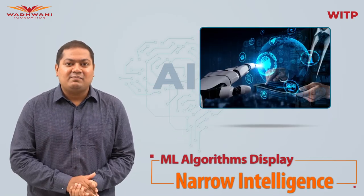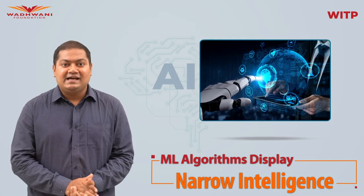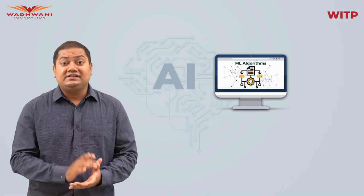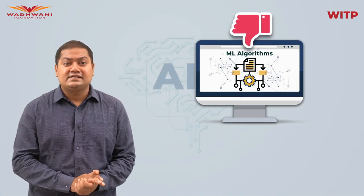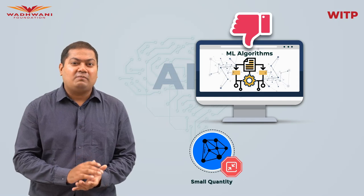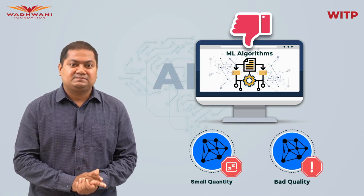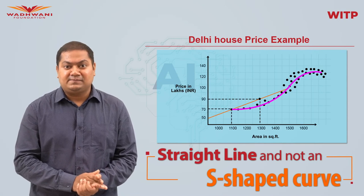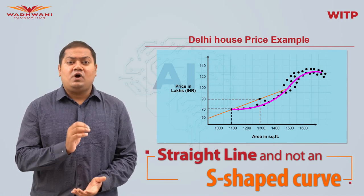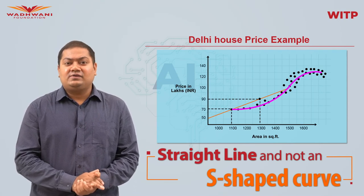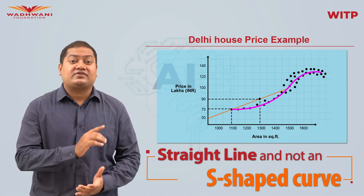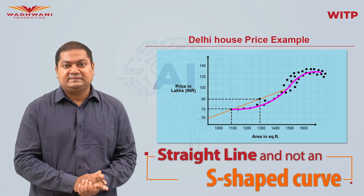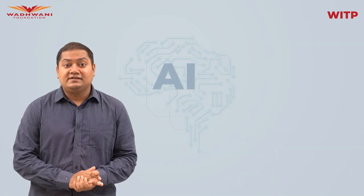So all those movies about robots taking over humans are quite far-fetched at the moment. Machine learning algorithms also cannot give good results with small quantities or bad quality of data — as we saw in the Delhi house price example, where with just two houses our ML algorithm said the relationship was a straight line rather than an S-shaped curve.